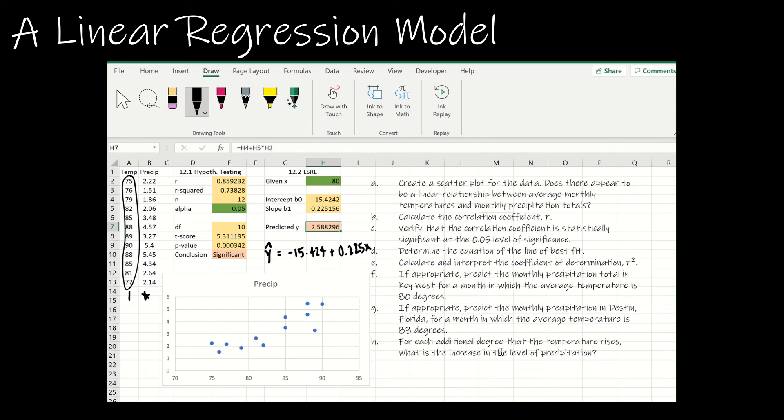And then H, for each additional degree that the temperature rises, what is the increase in the level of precipitation? Well, remember the slope sounds a lot like that. So the slope means 0.225 is the change in precip over 1 change in temperature. So what is the question in H? For each additional degree, the temperature rises. So for each additional X, what's the increase in the level of precipitation? 0.225, I'm assuming inches. I don't have a label on that. I apologize.